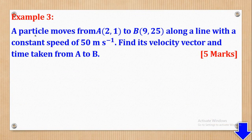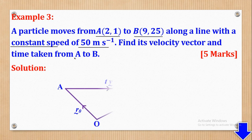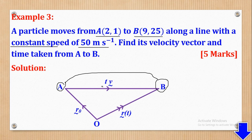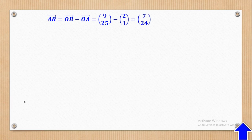Now we go to Example 3. A particle moves from point A with coordinates (2, 1) to point B with coordinates (9, 25) along a line with a constant speed of 50 meters per second. Find its velocity vector and the time taken from A to B. First make a sketch — it starts from A and ends at B. The displacement from the initial position equals T times velocity in vector form. We don't know the velocity vector or direction, but AB gives us the direction of motion, so we must first find AB.